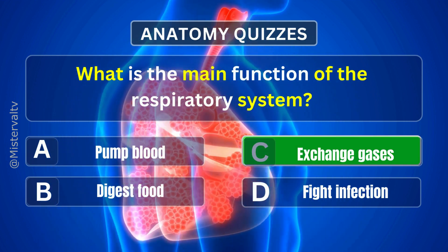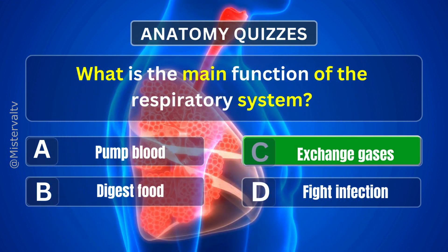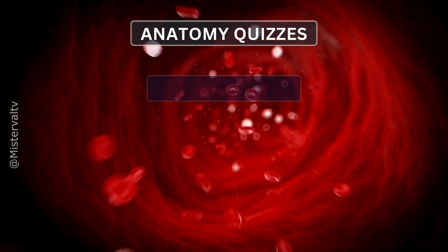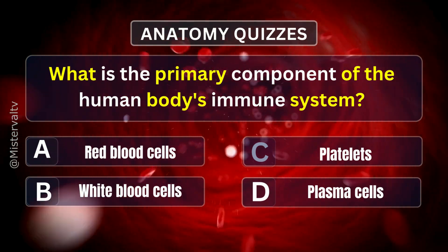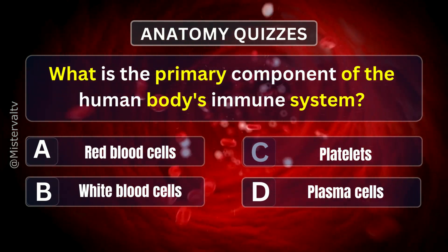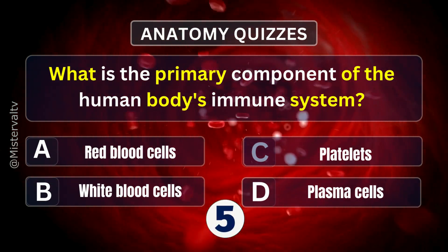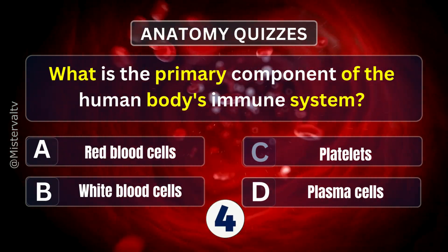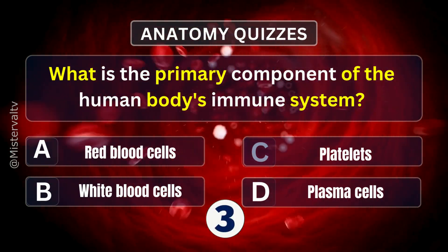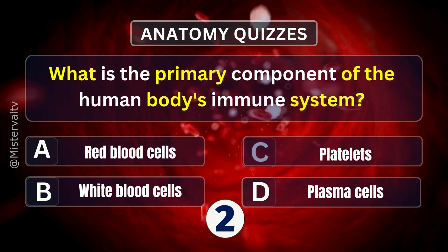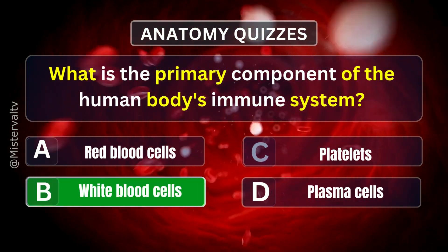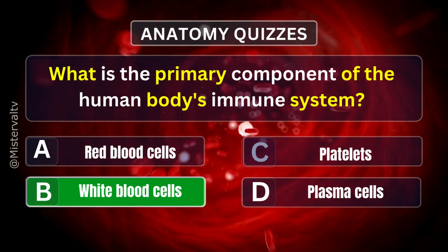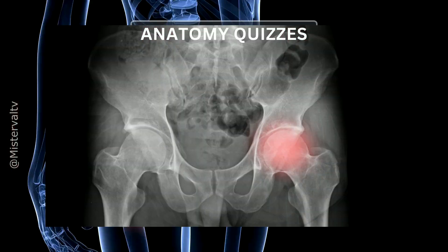What is the main function of the respiratory system? Answer. C. Exchange gases. What is the primary component of the human body's immune system? Answer. B. White blood cells.